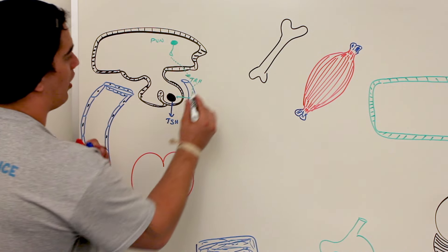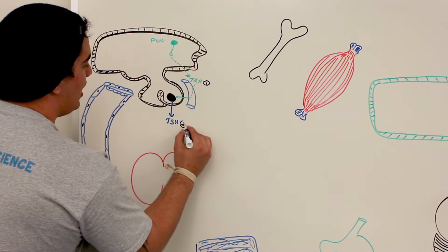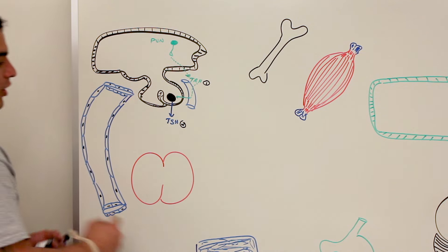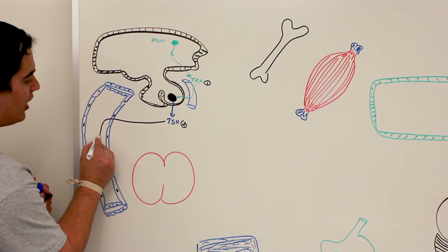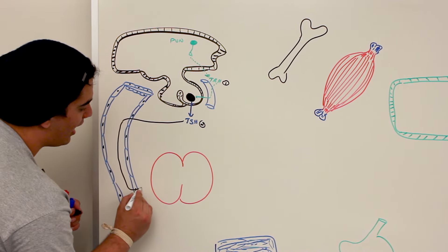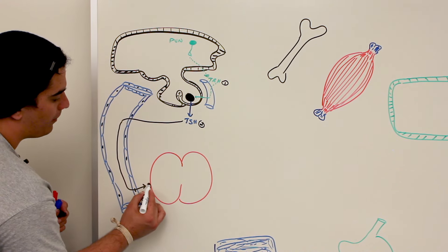So the first step was TRH, second step was TSH. What's the next thing? Well now we have the thyroid gland. What has to happen is the thyroid stimulating hormone is going to circulate down through the blood to the thyroid gland and then it's going to act on the thyroid gland.